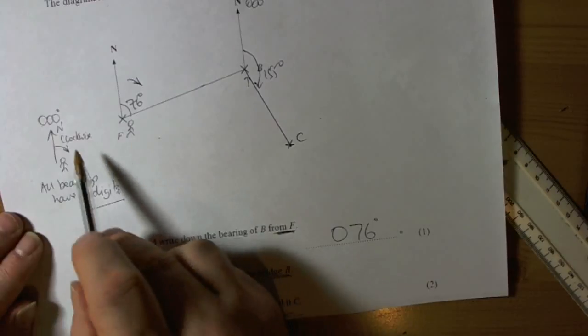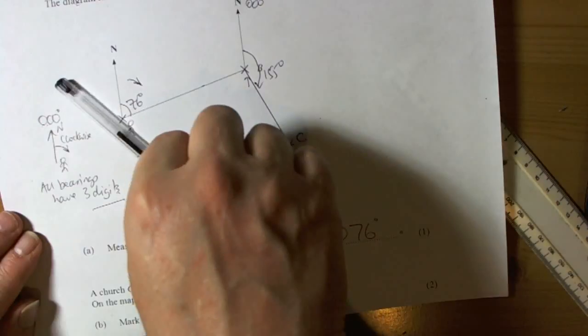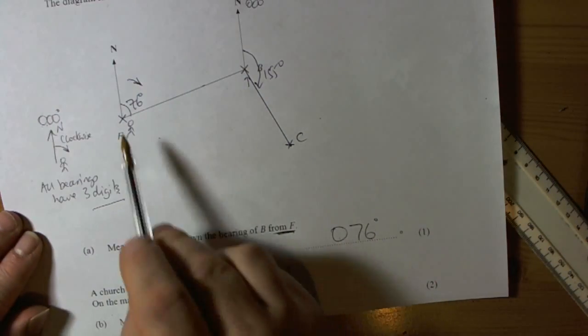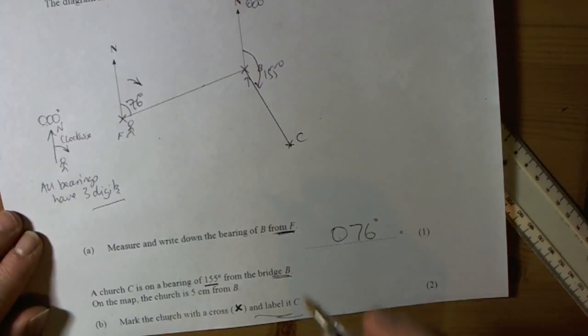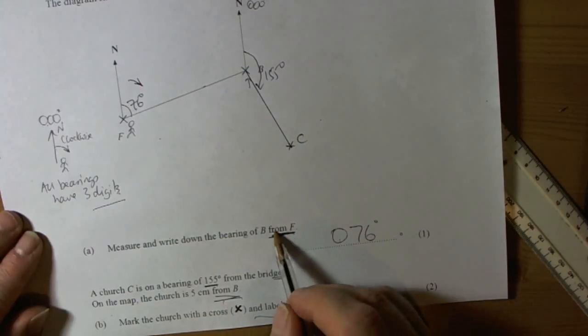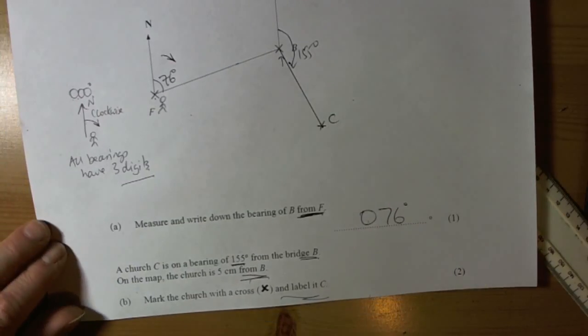So bearings always start facing north, turn in a clockwise direction, make sure your angle has three digits. So 076 in this case from B. And the from bit is always where you do your measuring. So if we're from B, we do the measuring from B. If we're from F, we do the measuring from F and so forth. So that's a recap of bearings.